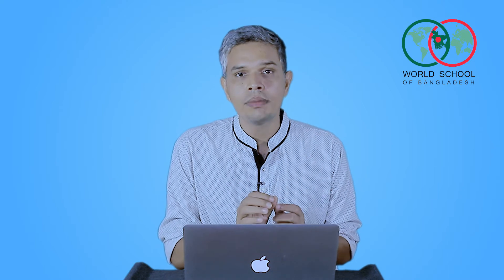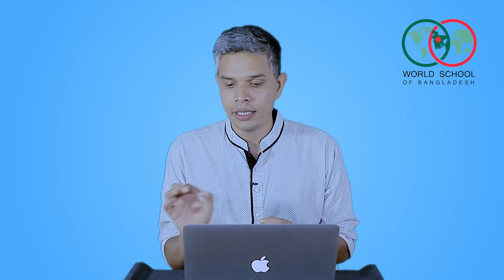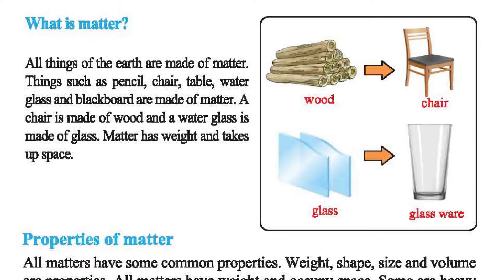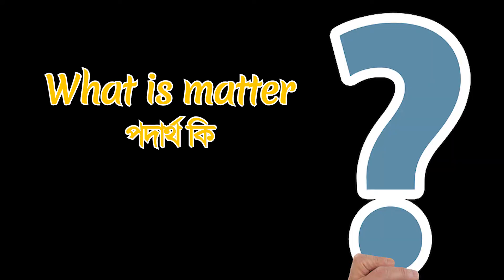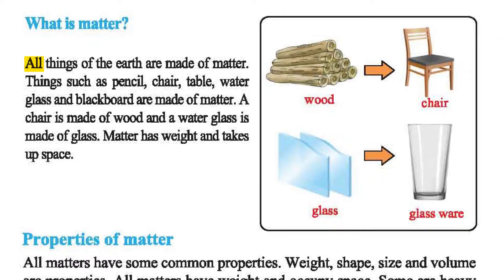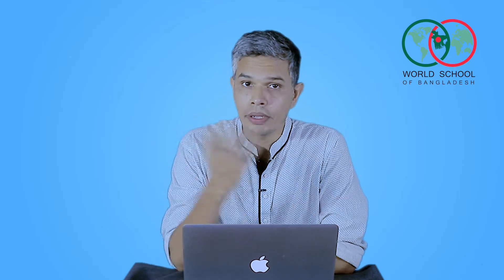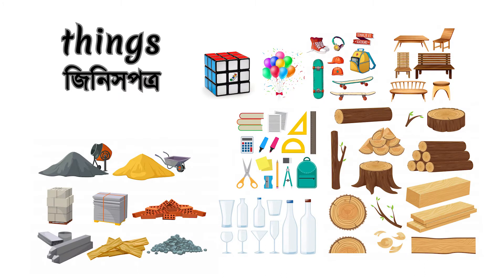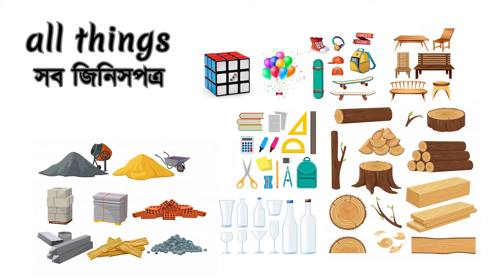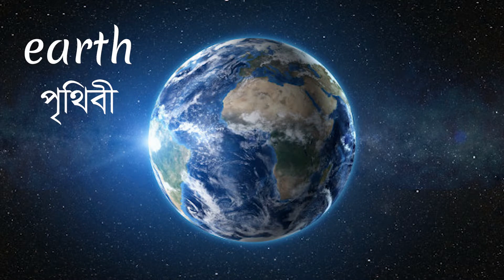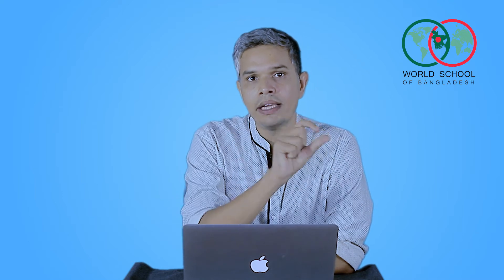What is matter? All things of the earth are made of matter. All things means all things. All things are made of matter.